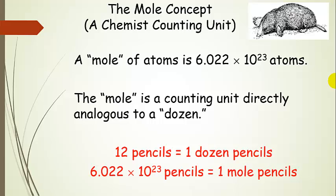Whenever we say a mole of anything — a mole of pencils, a mole of ping pong balls, a mole of flowers, a mole of seeds, a mole of atoms, or a mole of molecules — it's 6.022 times 10 to the 23rd of them. So in other words, it's a whole lot of them. Whenever we say we have a mole of something, we're always saying we have 6.022 times 10 to the 23rd.